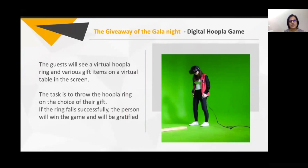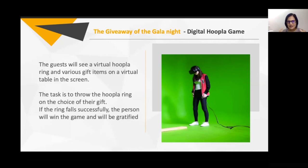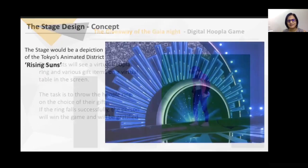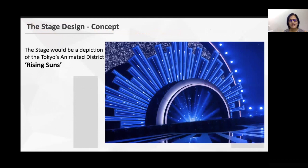For the giveaway, rather than handing out souvenir bags at the end, we suggested giving them at the beginning through a game. Guests wore VR headsets and could see different gifts — just like a ring toss game at a fair, they had to toss a virtual ring, and if they won, they got the gift. For the stage design, it would depict the rising sun with more red tones, connecting to Tokyo's animated district depicting the rising sun.